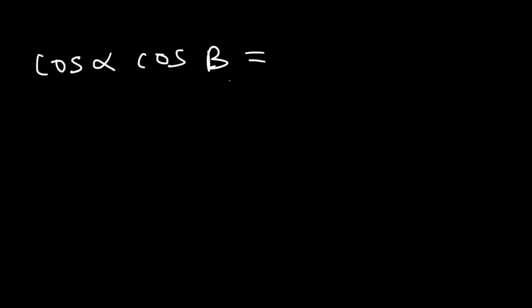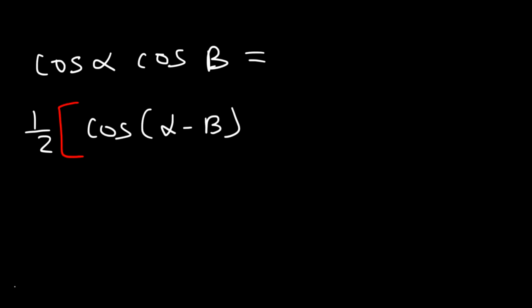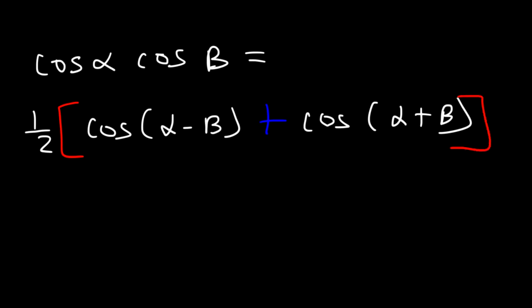Now let's write the other three. The next one is cosine alpha times cosine beta, and that's equal to one half cosine(alpha minus beta). And this time we're going to have a positive sign instead of a negative sign, so plus cosine(alpha plus beta). And so that's it for the second equation.